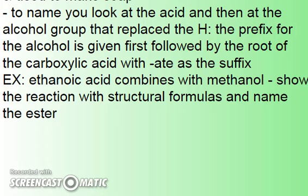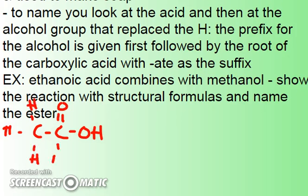So if it was from methanoic acid, it would become methanoate, and if ethyl alcohol were combined with it, I would say ethyl methanoate. In the example I have here, if you have ethanoic acid — which is two carbons with a COOH functional group — and it combines with methanol, which is just one carbon so we don't have to worry about where the OH is, these two combine to form an ester.